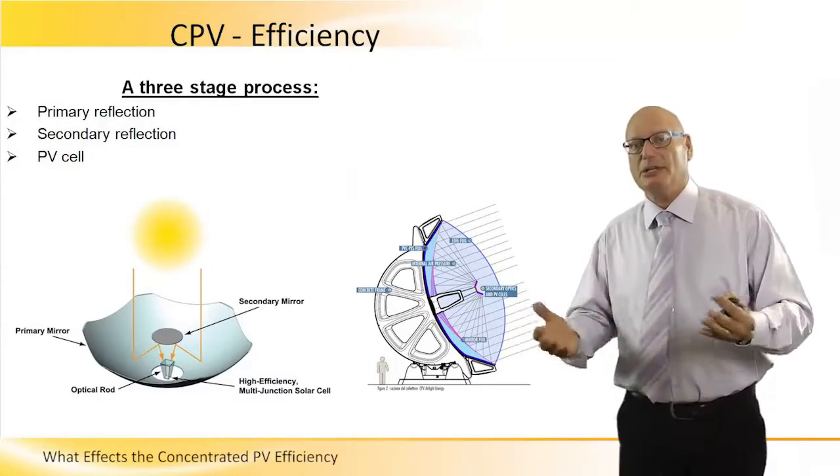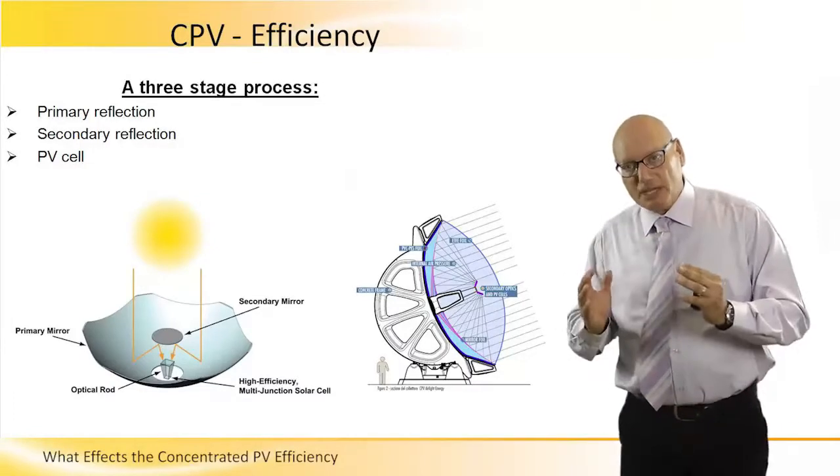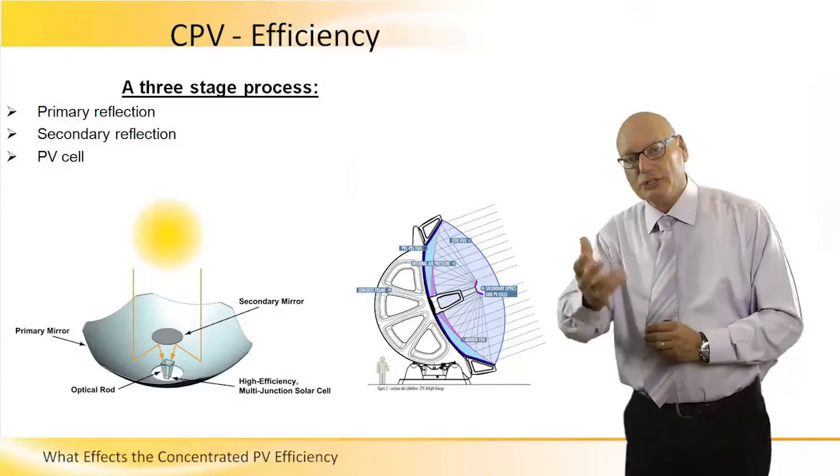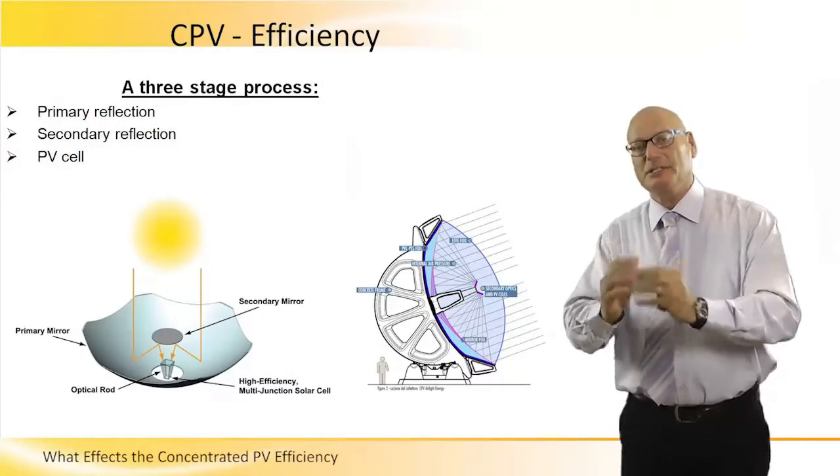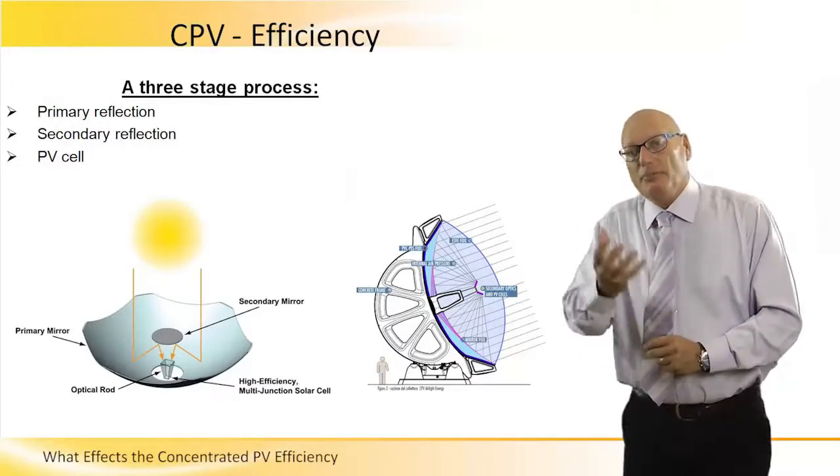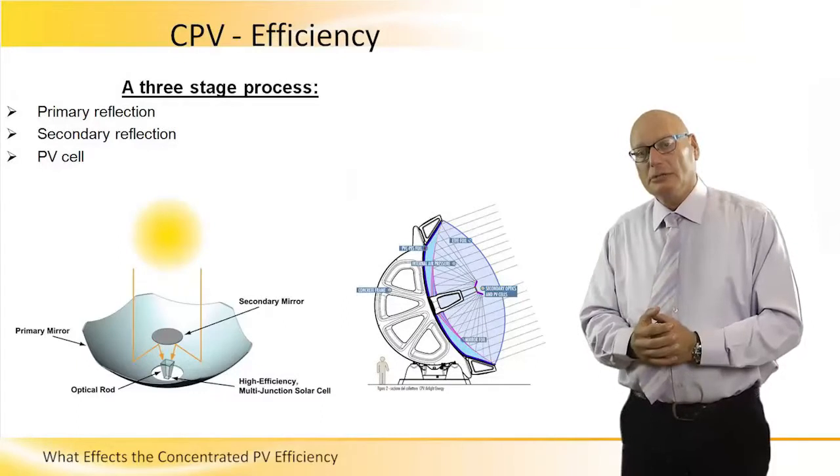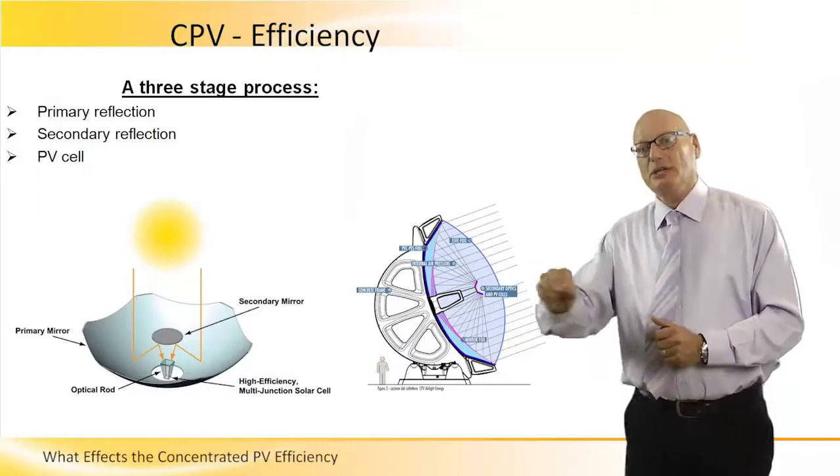Secondary reflection has the same idea. Concentrated light is being injected into the secondary mirror, which gets hot because it's focused, it's concentrated, it's high density of energy. The mirror by itself, by its nature, has its own losses, but the secondary has a higher temperature. So we have a loss right there.